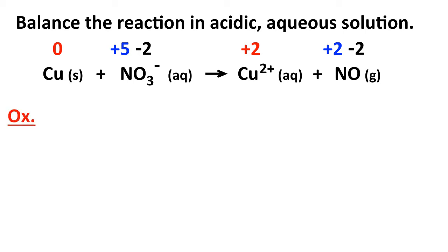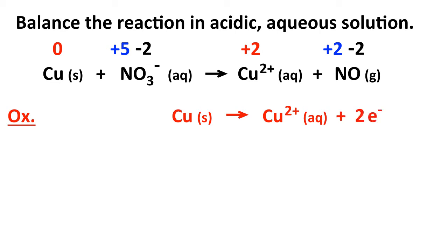Now that we know what was oxidized and reduced, we separate the overall reaction into half-reactions and balance them separately. The oxidation half-reaction is copper solid forming copper 2+. To balance it, we note that copper loses two electrons, so we place two electrons on the right-hand side: copper solid forms copper 2+ plus two electrons. That was an easy one to balance.